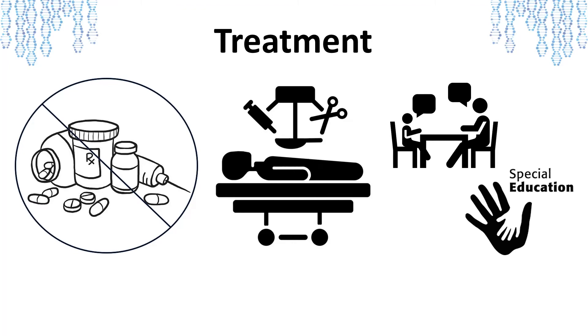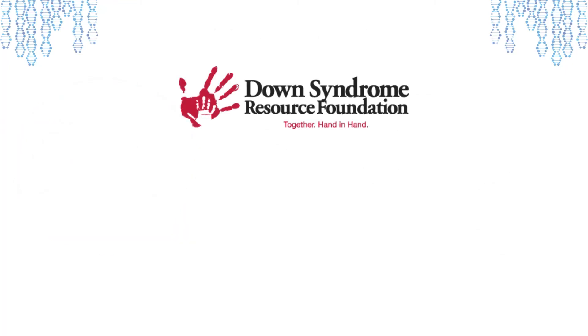All in all, our progress in terms of understanding Trisomy 21 and Down syndrome has been very promising. Several organizations such as Down Syndrome Resource Foundation and Global Down Syndrome Foundation have taken initiative in leading the charge, making the future brighter for those affected by Down syndrome.